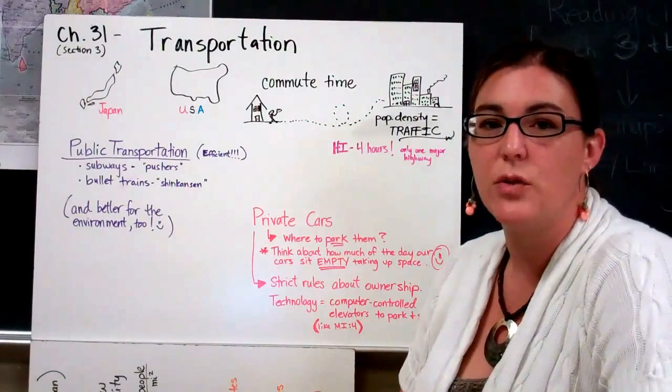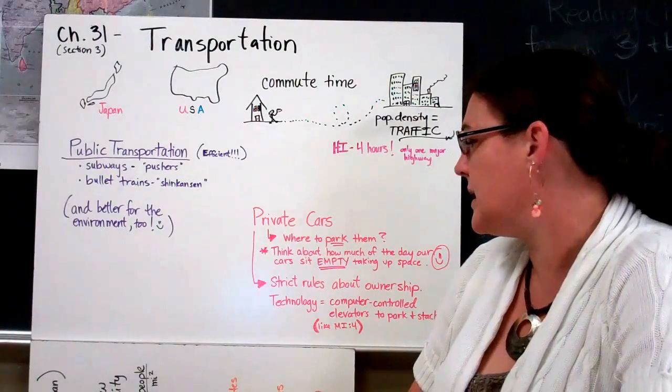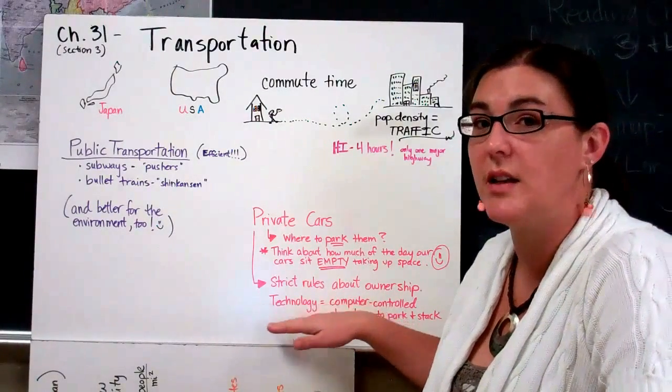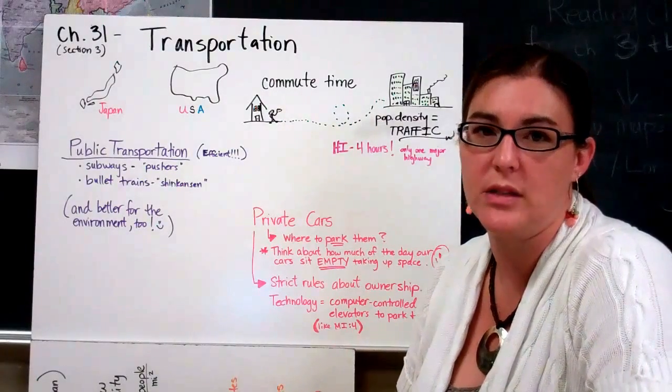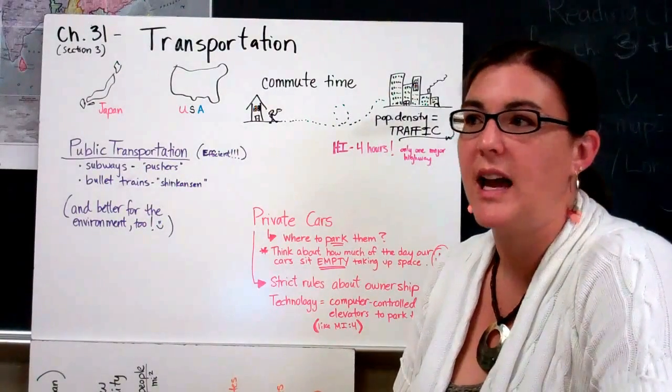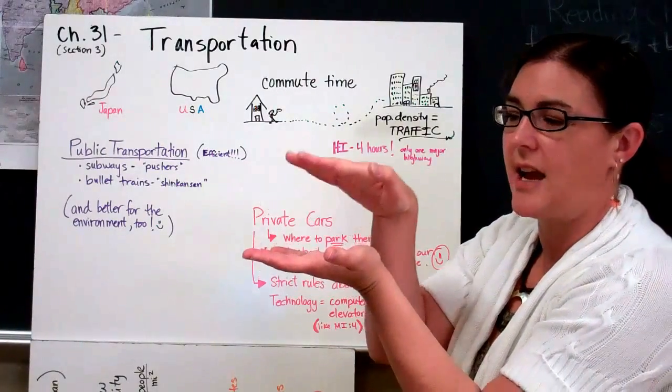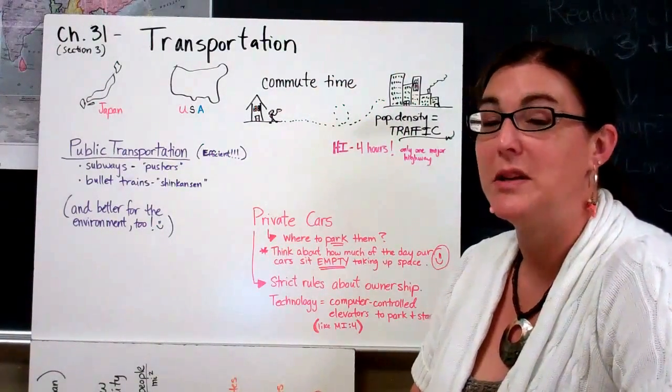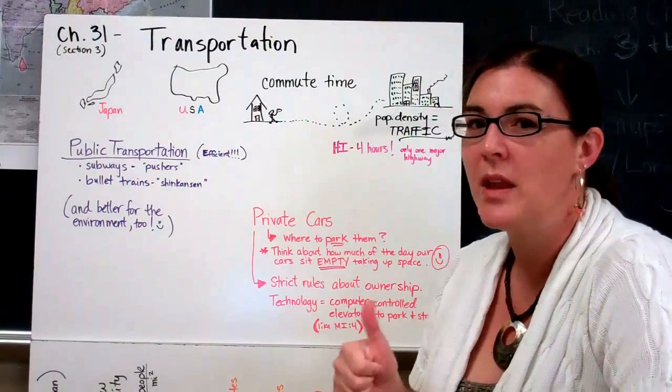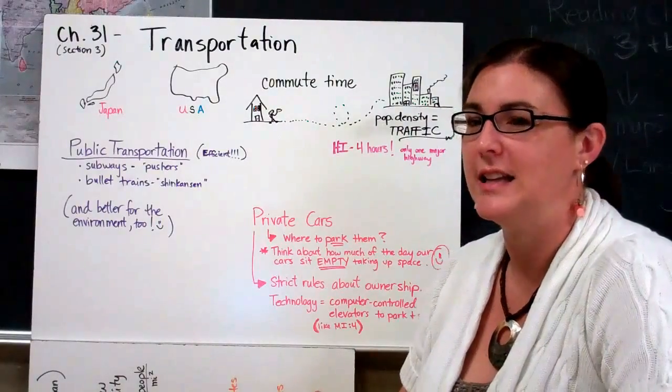But Japan does have strict rules about ownership. If you don't have a place to park it, you can't own a car. And the idea that they're using their technology to benefit them in terms of helping out with this transportation issue. They have large parking garages where computers will park your cars stacked very closely together like a shoebox they mentioned. And if anybody's seen Mission Impossible 4, good movie, set in Asia, there's an example of a parking garage at the end.